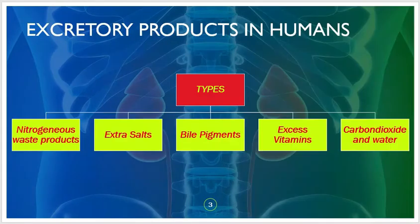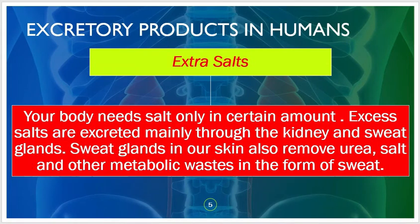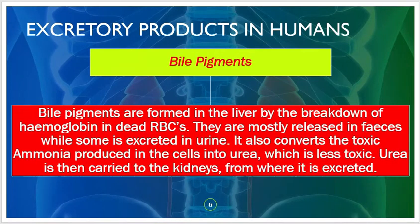Excretory products in the human body are of five types: nitrogenous waste products, excess salt, bile pigments, excess vitamins, carbon dioxide, and water. Nitrogenous waste products are formed by the breakdown of excess protein, producing ammonia, urea, and uric acid. These are removed through the kidneys. Excess salts are excreted mainly through the kidneys and sweat glands, which also remove urea, salt, and other metabolic waste as sweat.